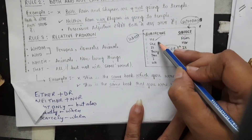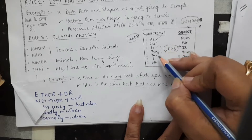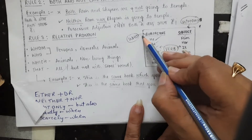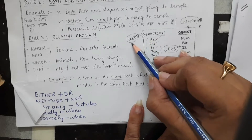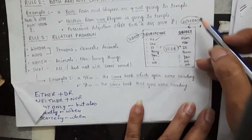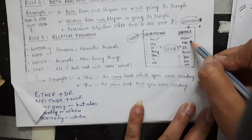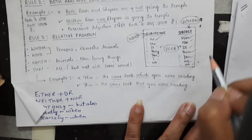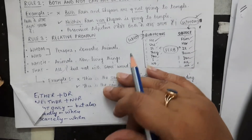Subjective pronouns — He, she, it, they, you, I, we — will all take 'who'. We will use 'who' with these. Objective pronouns — him, her, it, them, you, me, us — will use 'whom'.